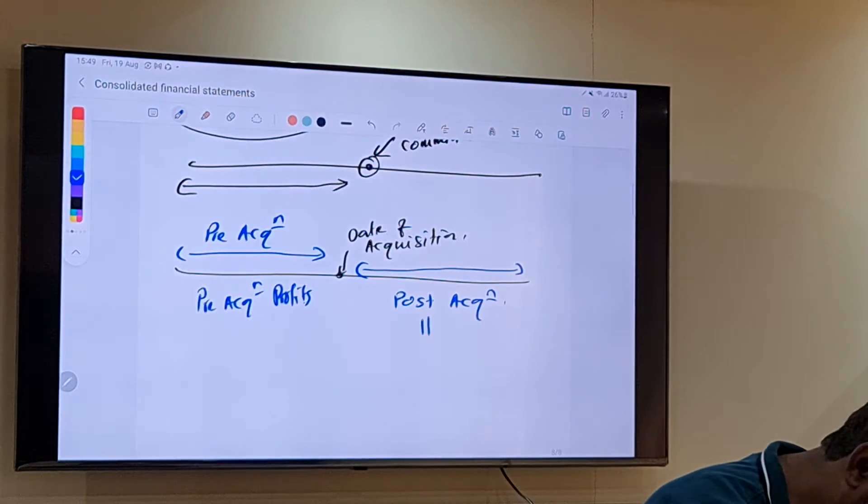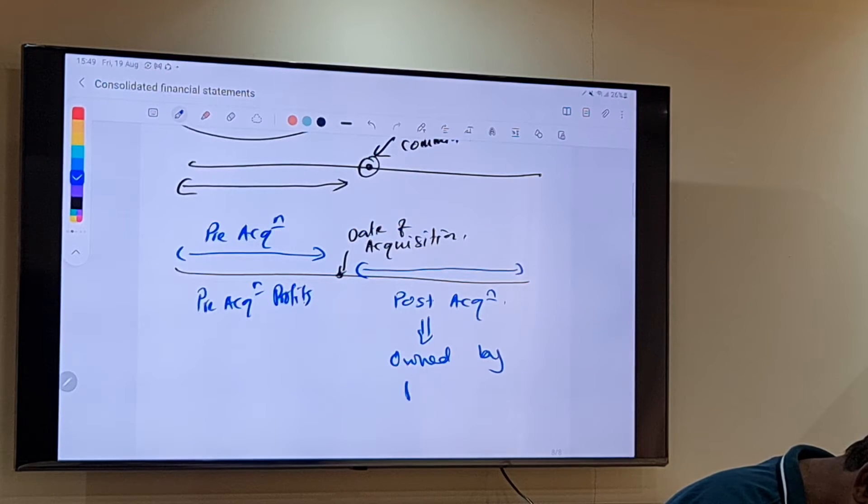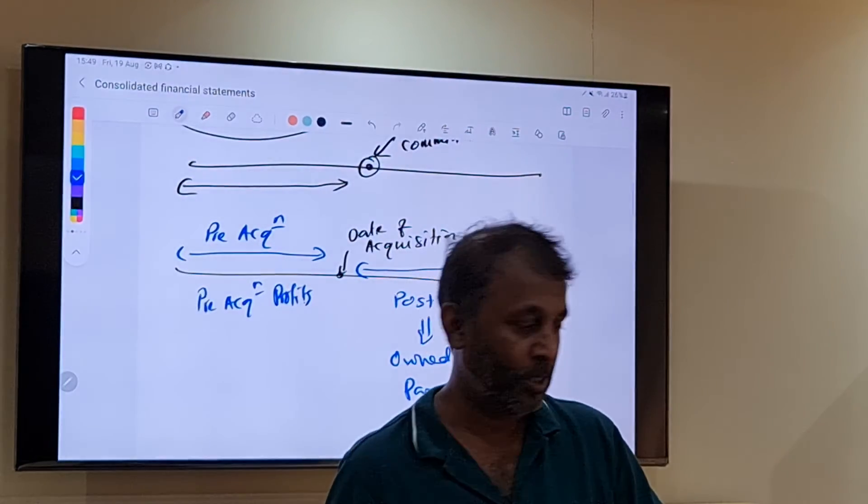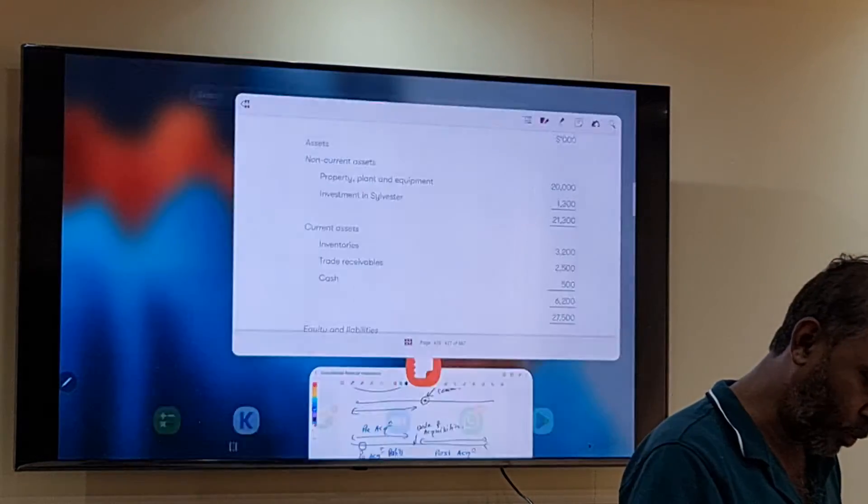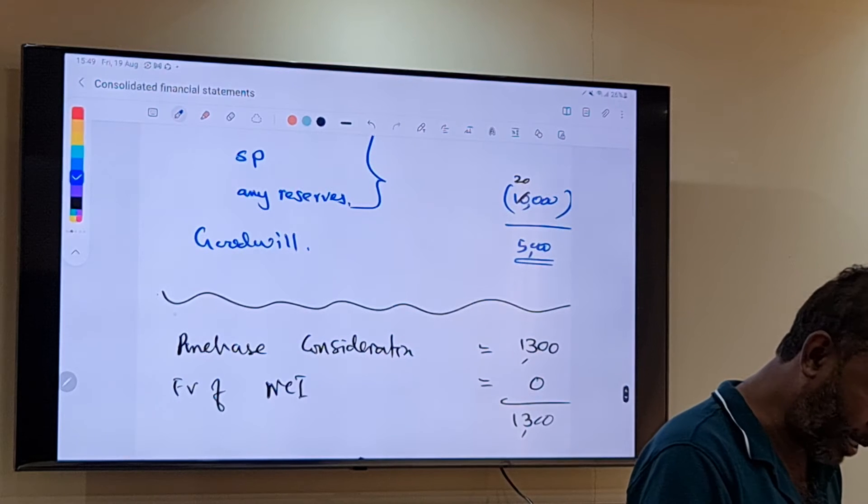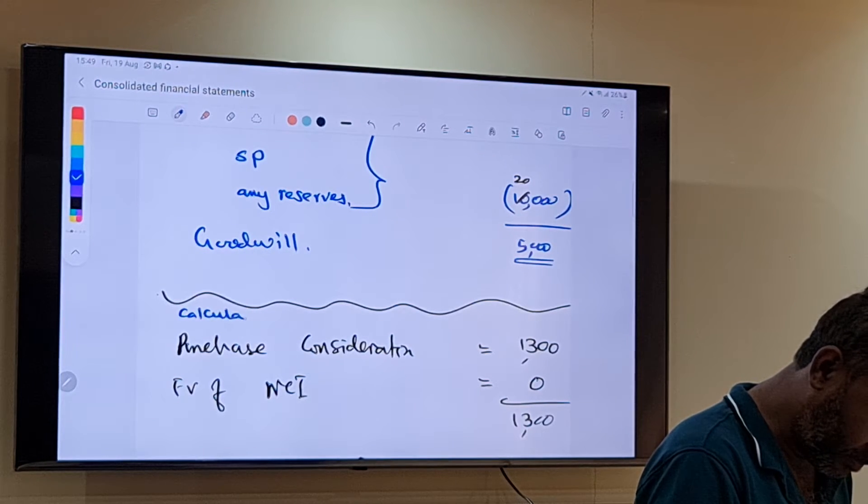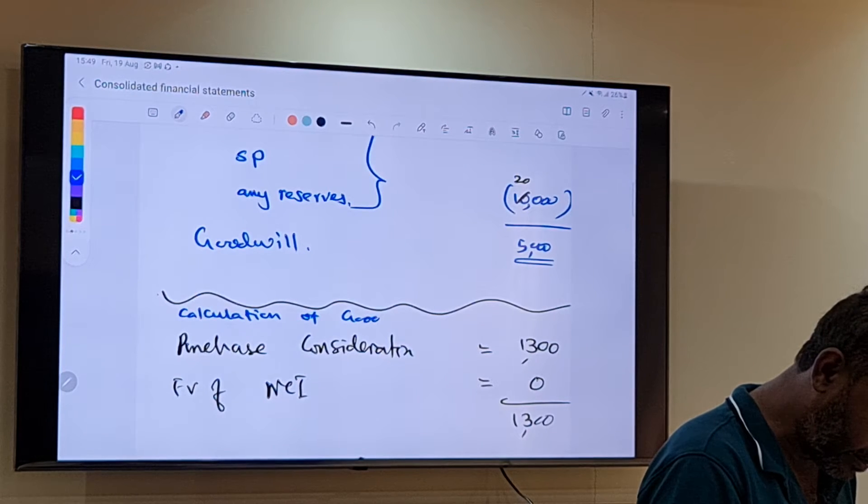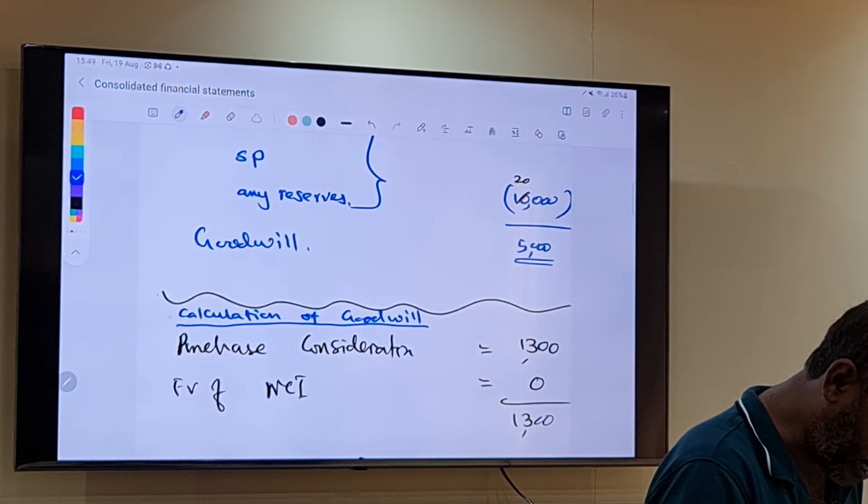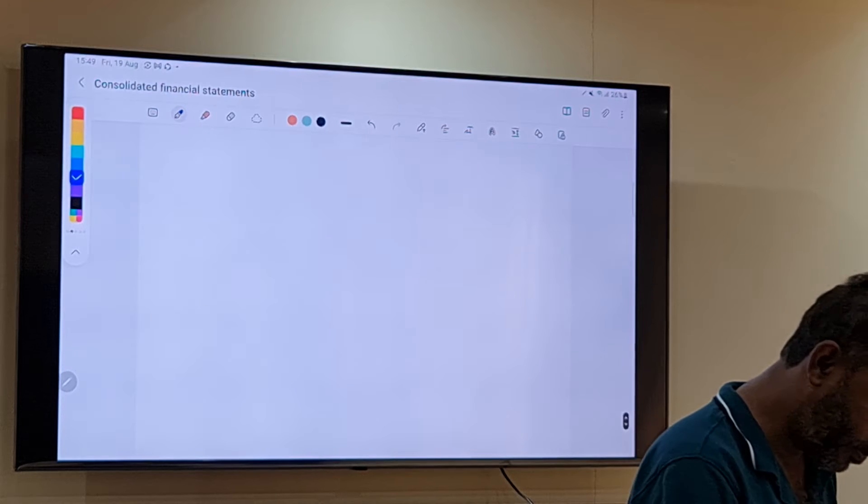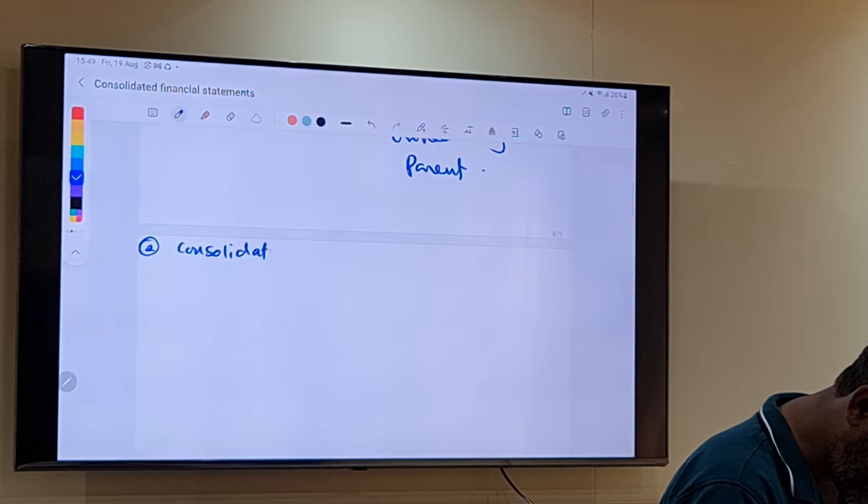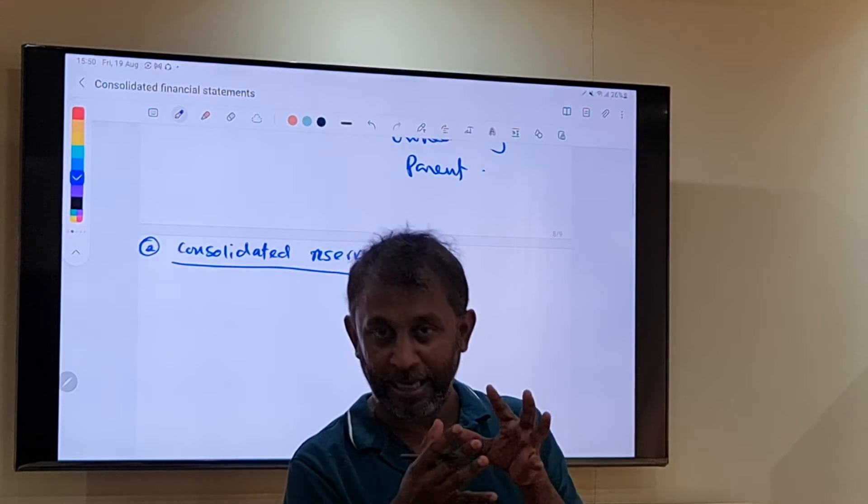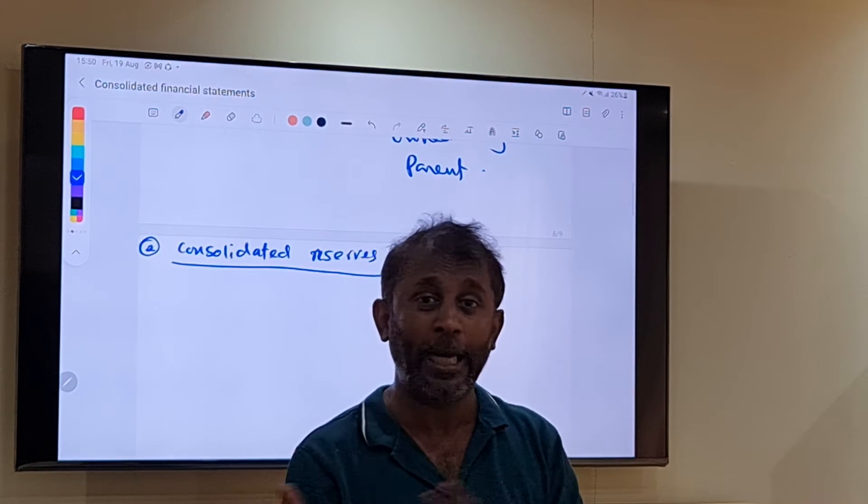After the acquisition, the profits of the subsidiary are owned by whom? Parent. So the post-acquisition profits will be owned by parent. This is the first working. This working we call calculation of goodwill.